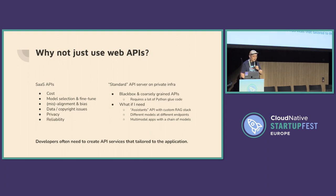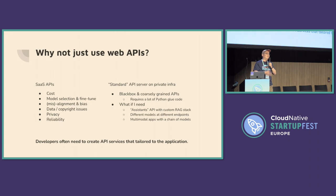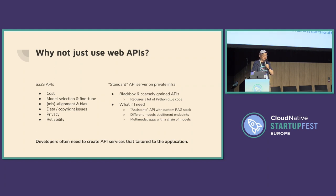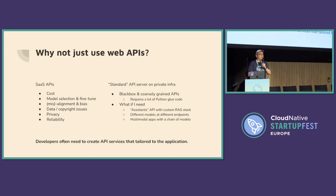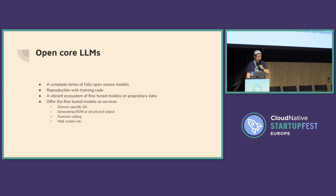People also ask why you need open source models when you can just use the web APIs. There are lots of reasons: centrally hosted models constantly refuse to answer certain questions they deem politically sensitive or harmful. There's great benefit — from cost, alignment, safety, and everything else — to having your own model built for your own use case, based on a base model and fine-tuned yourself.